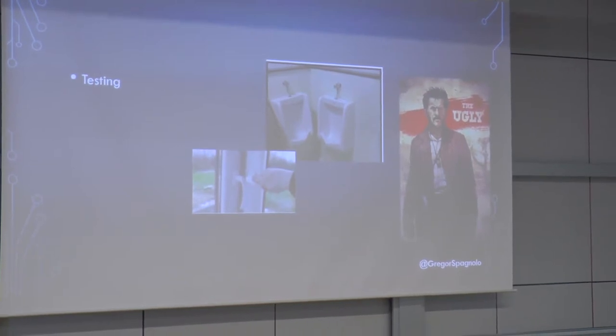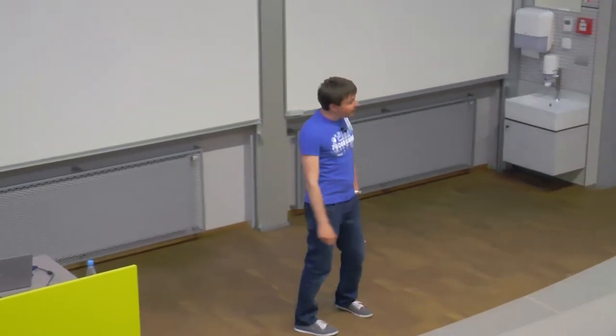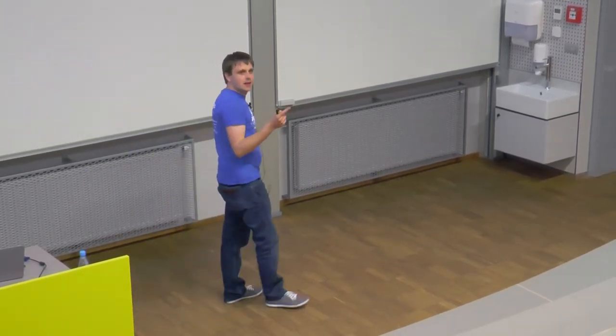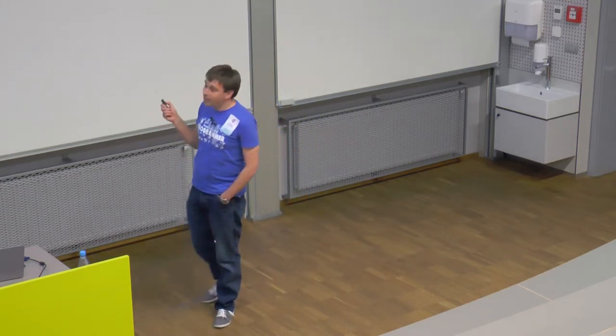Then, the next ugly thing about microservices is management. Why management? In case of the monolithic system, how many log files do you have? One, two, three. Let's say error, information log, and warning log. In case of the microservices, how many logs do you have? Three. For each service, you have three logs. So to debug or to trace the problem, you'll have to look at multiple logs, not just one.